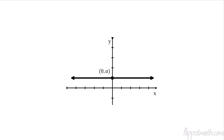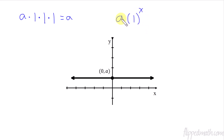This next part is not in the notes. If I take some constant a and multiply it by the number one, I get a. Multiply by one again, still a. So a times 1^x would just equal a — a flat line. It's not growing, not getting larger, not getting smaller. It's just a constant. So that's why b cannot equal one if we want actual exponential behavior.